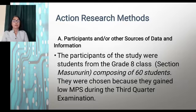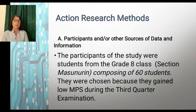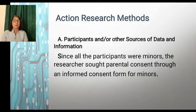For the action research method, the participants or other sources of data and information: the participants of the study were students from Grade 8, section Masunurin, composed of 60 students. They were chosen because they gained low MPS during the third quarterly examination. Since all the participants were minors, the researchers sought parental consent through an informed consent form for minors.